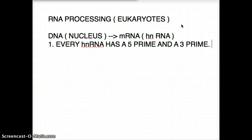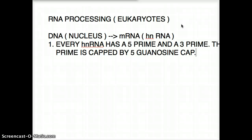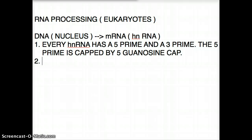The first thing that happens inside the nucleus is that the five prime gets a cap called the five prime guanosine cap. So the five prime is capped by a guanosine cap. This is the first thing that happens — that's why I put it as number one.